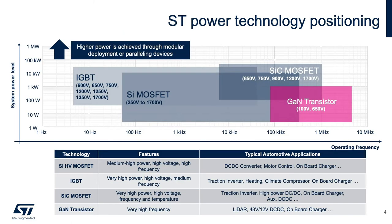In this slide, we talk about the positioning of different high voltage power transistors. IGBTs are capable of high currents and high power delivery, while they have limitations in regards to switching frequency.